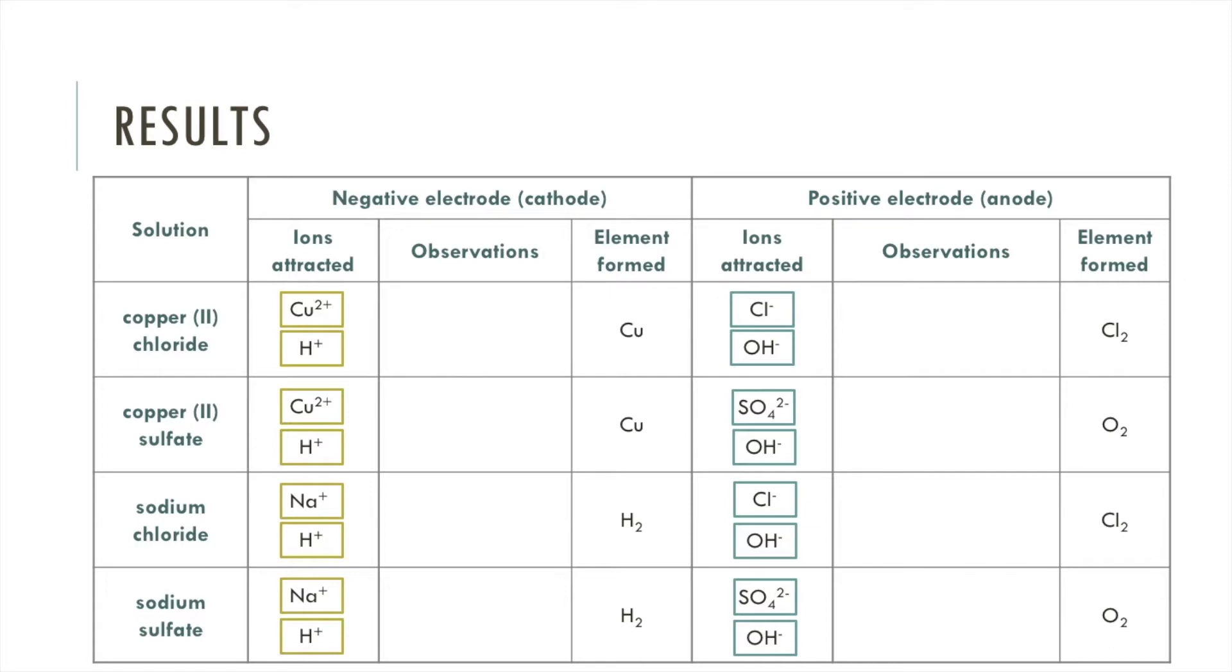At this point in the practical you fill in your results table. Now we've observed that copper is formed on the negative electrode and we observed fizzing at the positive electrode which indicates a gas had been produced. The blue litmus paper was bleached which shows that the gas produced was chlorine. This matches up with our predictions from the previous video.